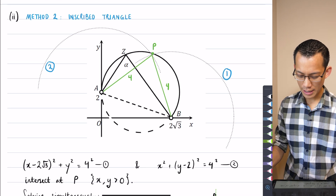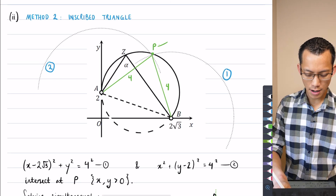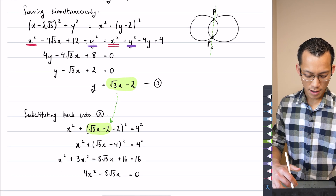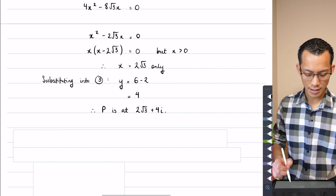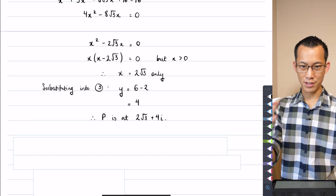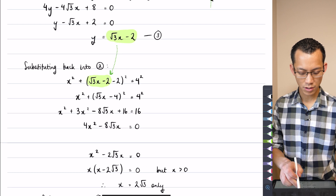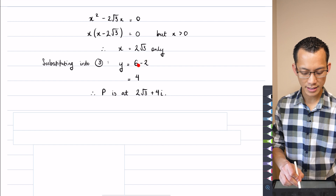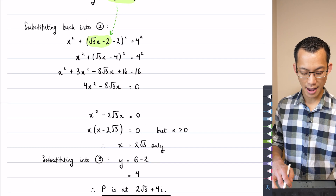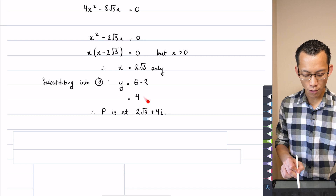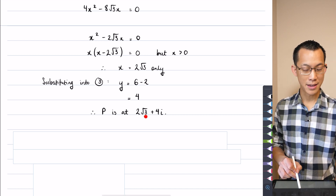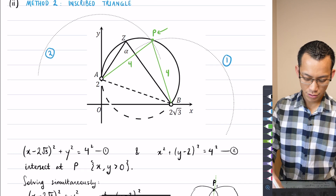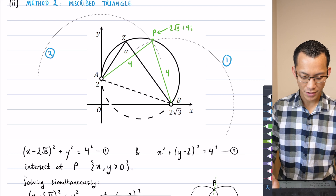I can use x = 2√3 to find y by substituting into the line equation. Putting in 2√3: 2√3 × √3 = 6, so y = 6 − 2 = 4. So P is at the point 2√3 + 4i. Let me just put that back on my diagram — 2√3 + 4i.